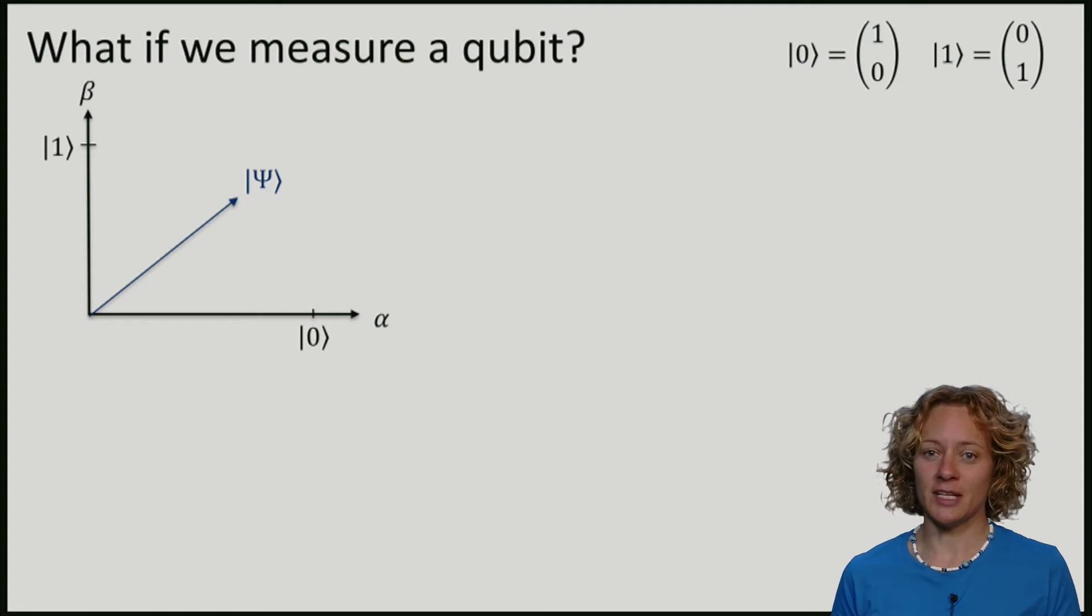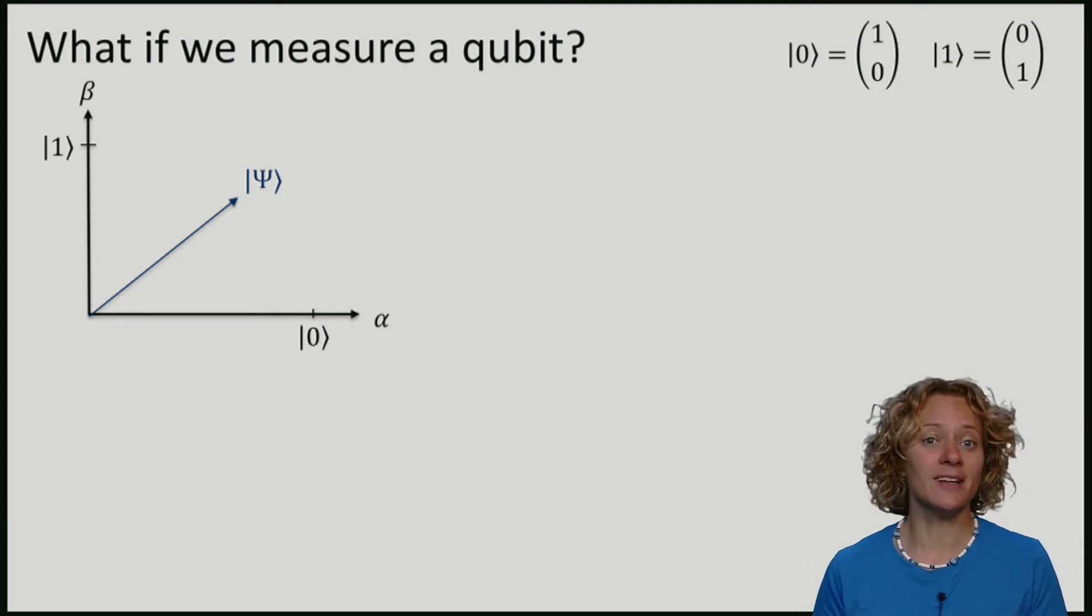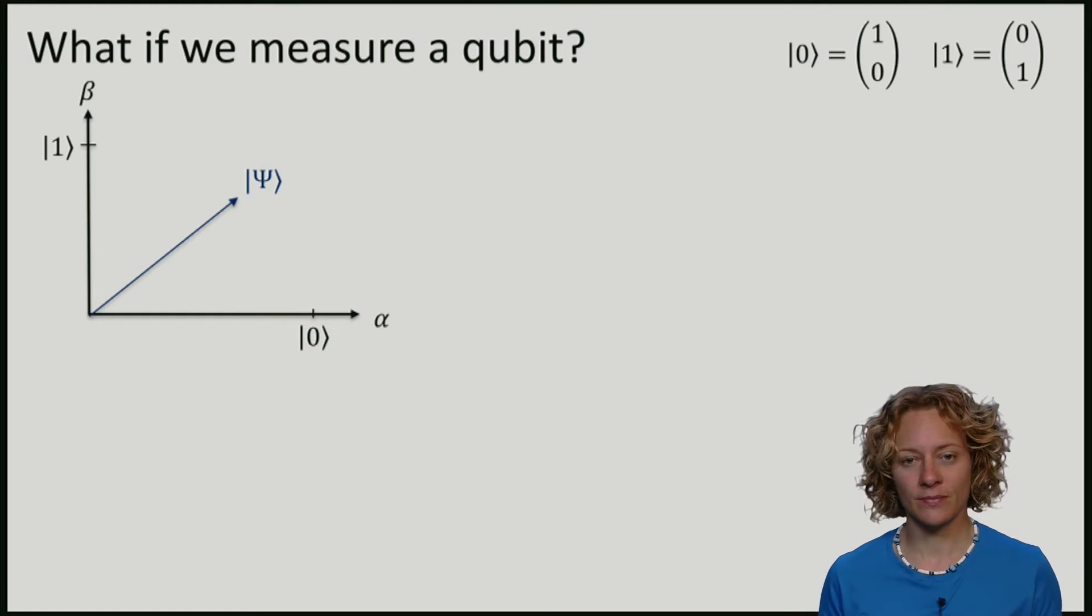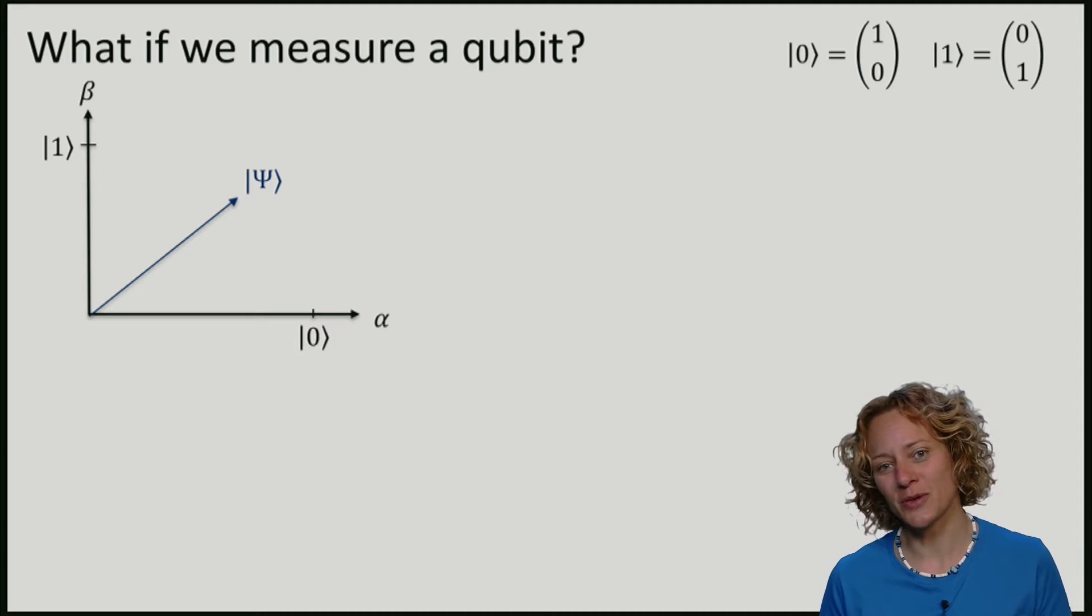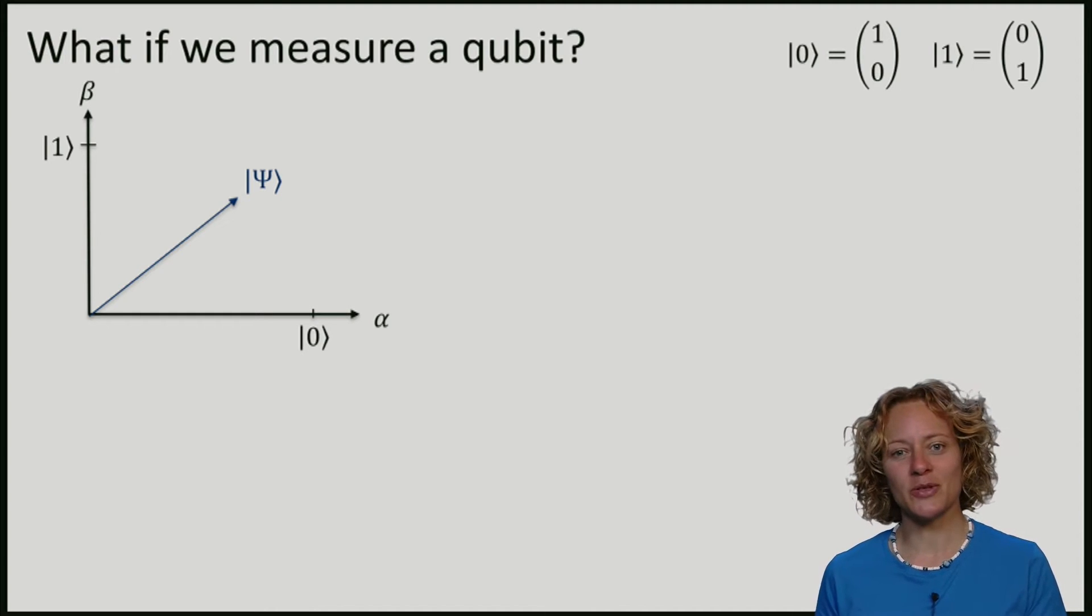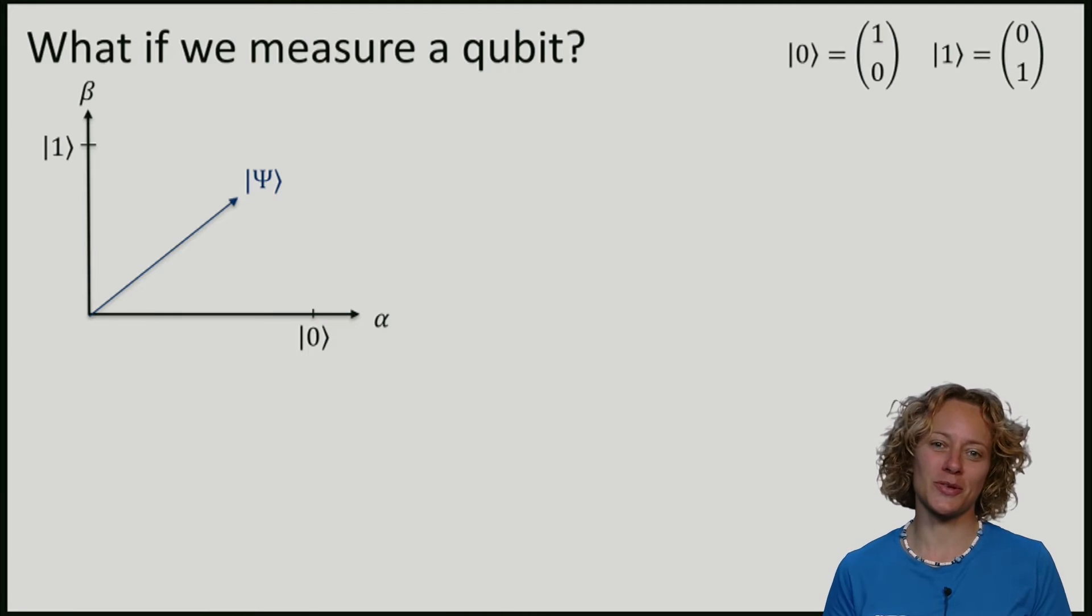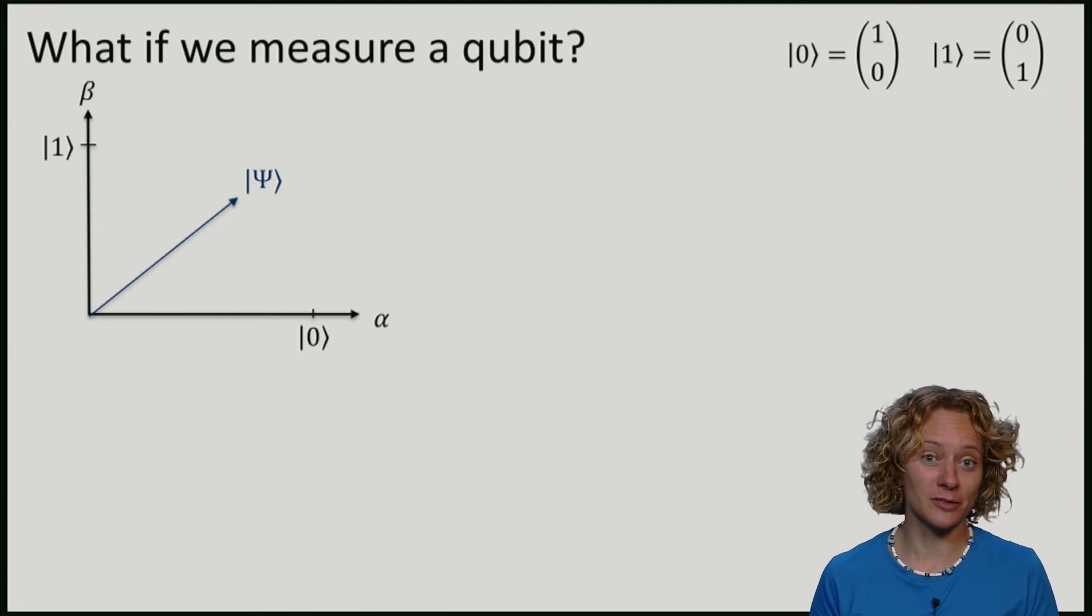It turns out that if the qubit is somewhere in the middle, in a superposition between 0 and 1, then we will generate answers with some probability. The probability of these measurement outcomes, for instance for outcome 0, can be computed by looking at how much 0 is actually in our qubit vector.